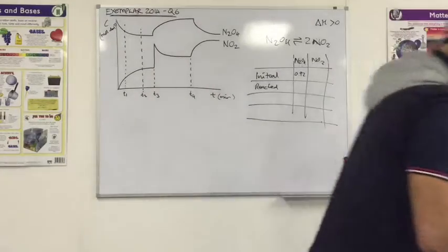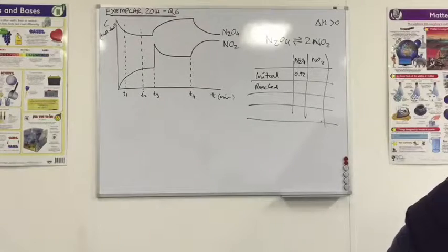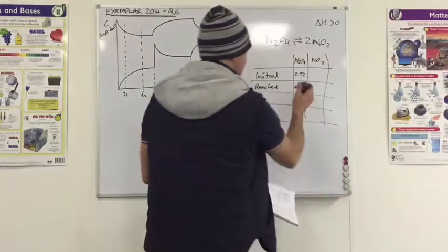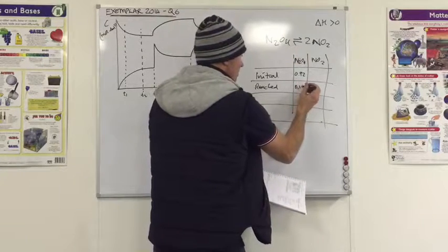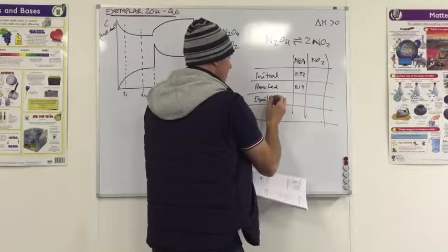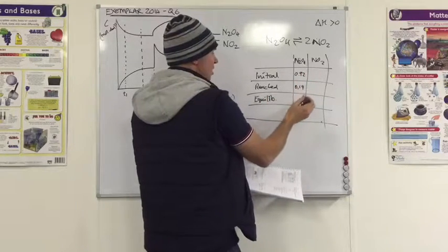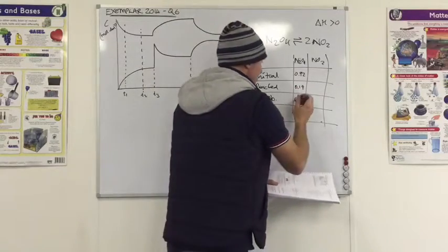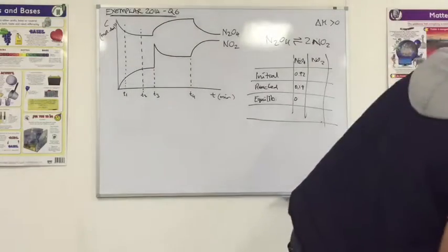So you do a little calculation. What's 20.7% of 0.92? And it works out to be about 0.19. Leaving at equilibrium, remember, you do the I minus R will give you E. And so that will leave us with 0.73. Okay.